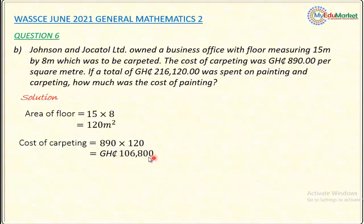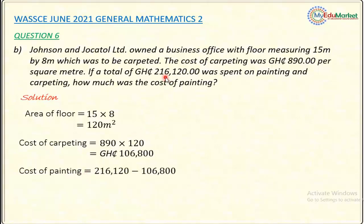I will now subtract the cost of carpeting from the total cost to get the cost of painting. Cost of painting = total cost − cost of carpeting = 216,120 − 106,800 = 109,320 Ghanaian cedis. This is the cost of painting, and by this I have answered the question: how much was the cost of painting? This is the cost of painting only.